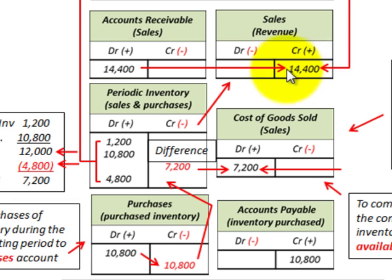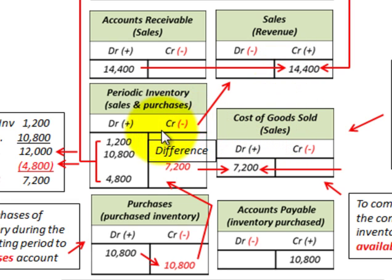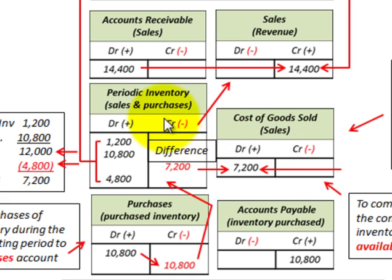Sales for the period are recorded, and the $7,200 difference in the periodic inventory account is moved over to recognize cost of goods sold, which reduces sales revenue. With periodic inventory, we don't track each sale individually; any overages or shortages are buried in the cost of goods sold account. That's how the periodic inventory method is used to determine cost of goods sold for the period.